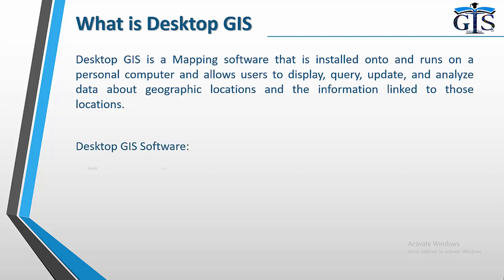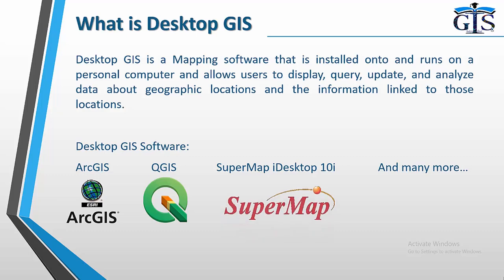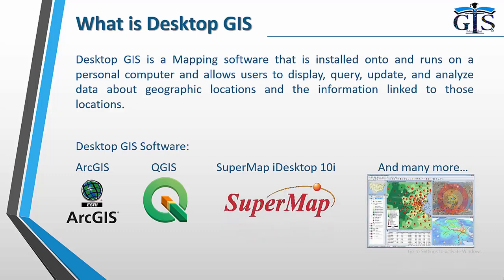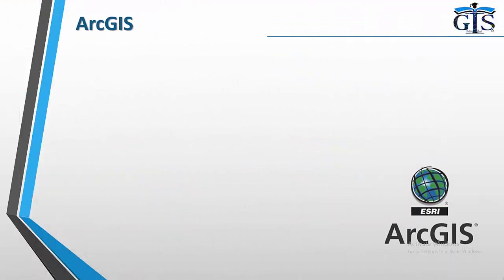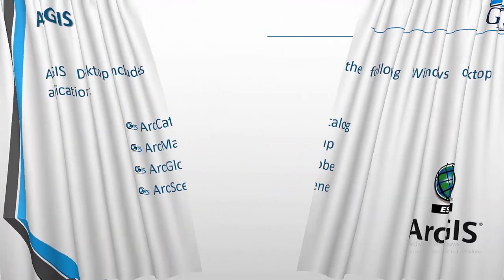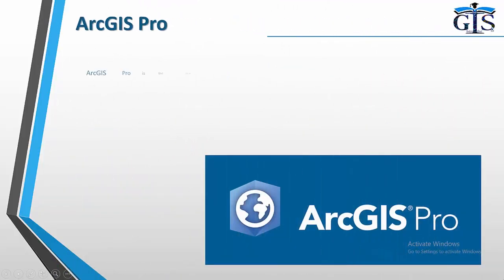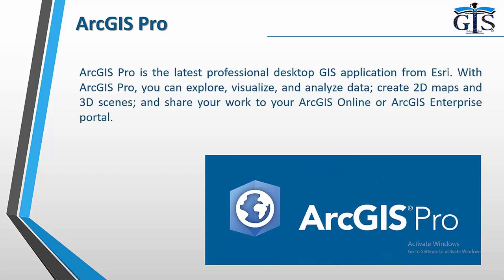Desktop GIS software includes ArcGIS, QGIS, SuperMap and many more. ArcGIS Windows desktop applications include Arc Catalog, ArcMap, ArcGlobe and ArcScene. ArcGIS Pro is the latest professional desktop GIS application from Esri.